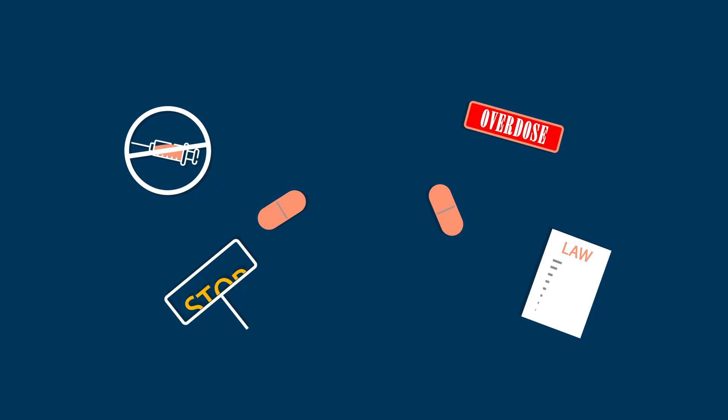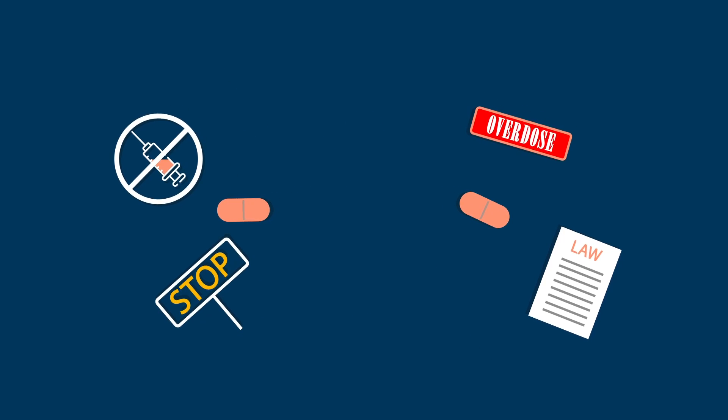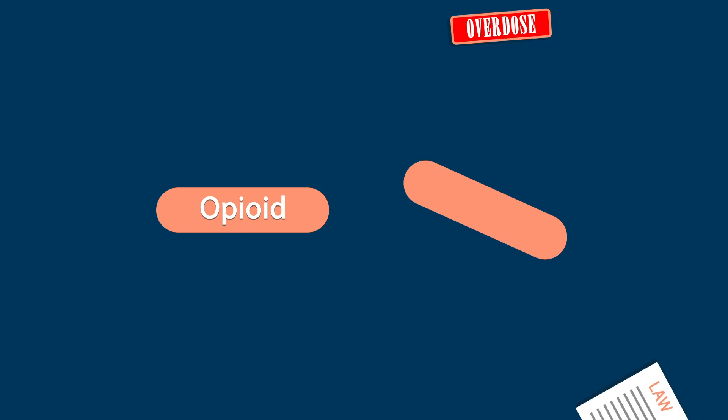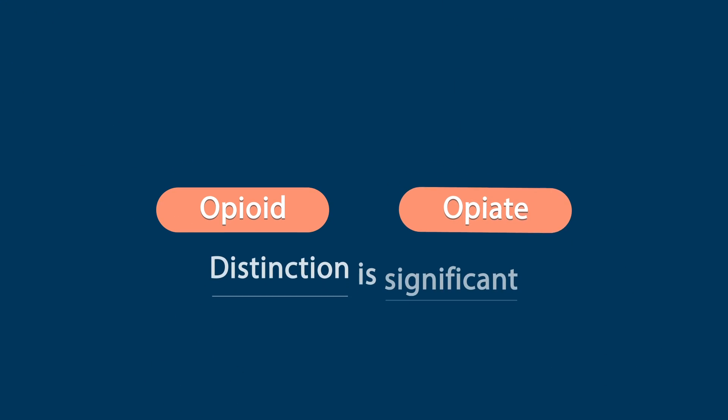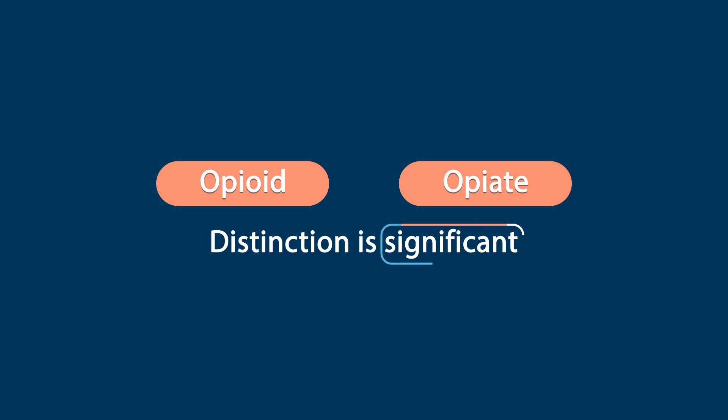But despite all the media attention on this scourge, not many people can tell you the difference between an opioid and an opiate. While subtle, the distinction between opioids and opiates is significant.